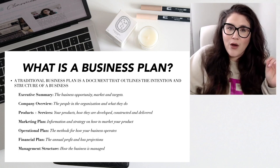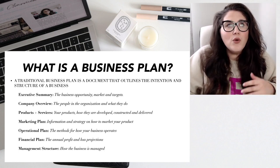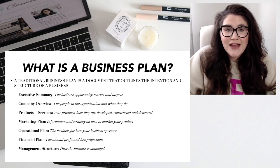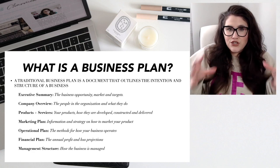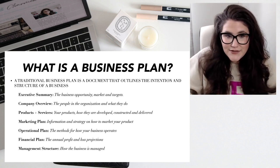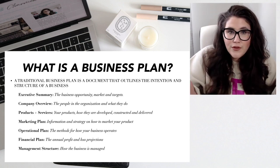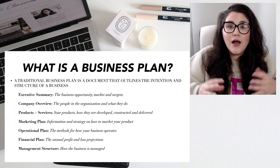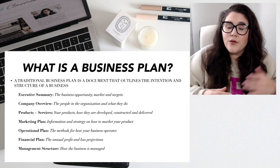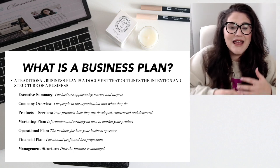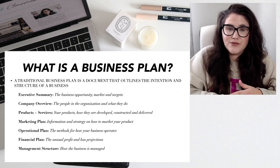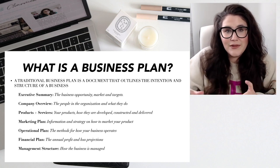So let's start by talking about what a business plan is. When I say business plan, what comes to mind is that traditional document that outlines the intention and structure of a business. These traditional documents would include an executive summary — essentially the business opportunity, the market, and targets the business is trying to accomplish — a company overview covering the people in the organization and their responsibilities, and a products and services section covering how your products are developed, constructed, and delivered.